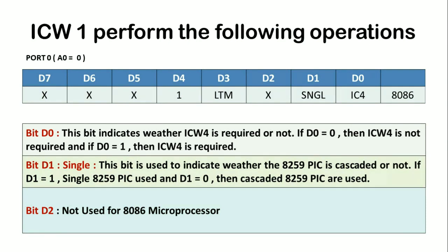For initialization of the 8259 PIC, ICW1 must always be sent first. Whenever a command word is issued with A0 equal to 0 and D4 equal to 1, this is interpreted as Initialization Command Word 1, or ICW1. ICW1 starts the initialization sequence of the 8259 PIC.